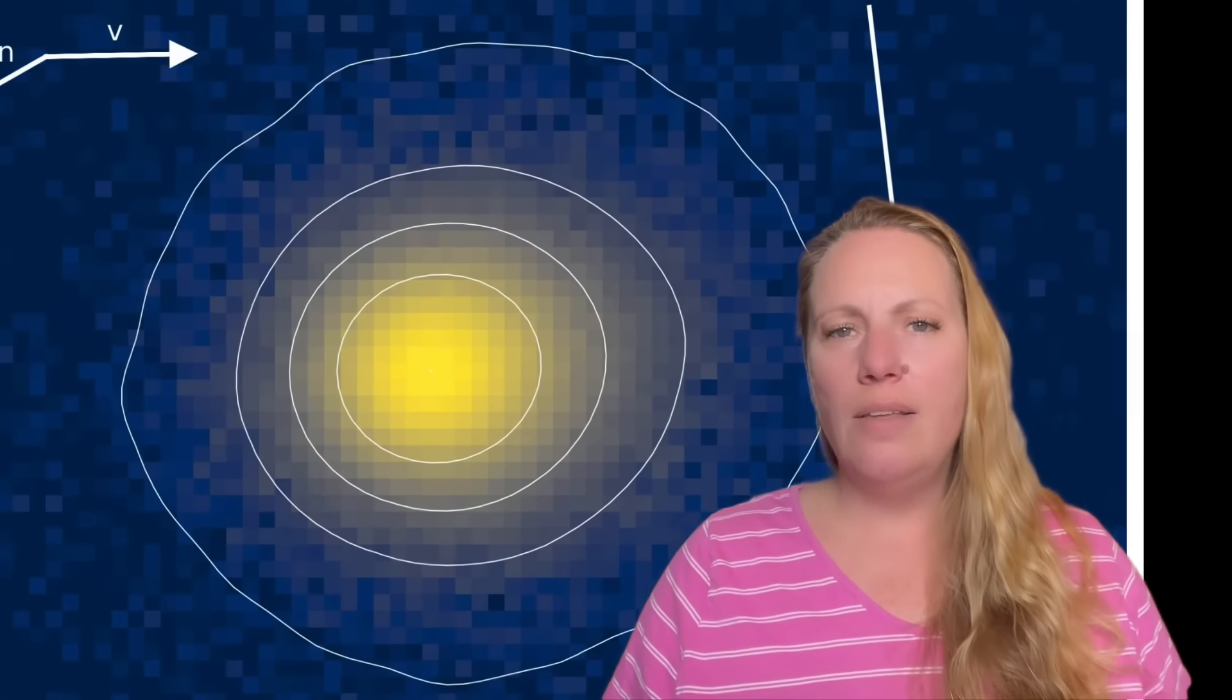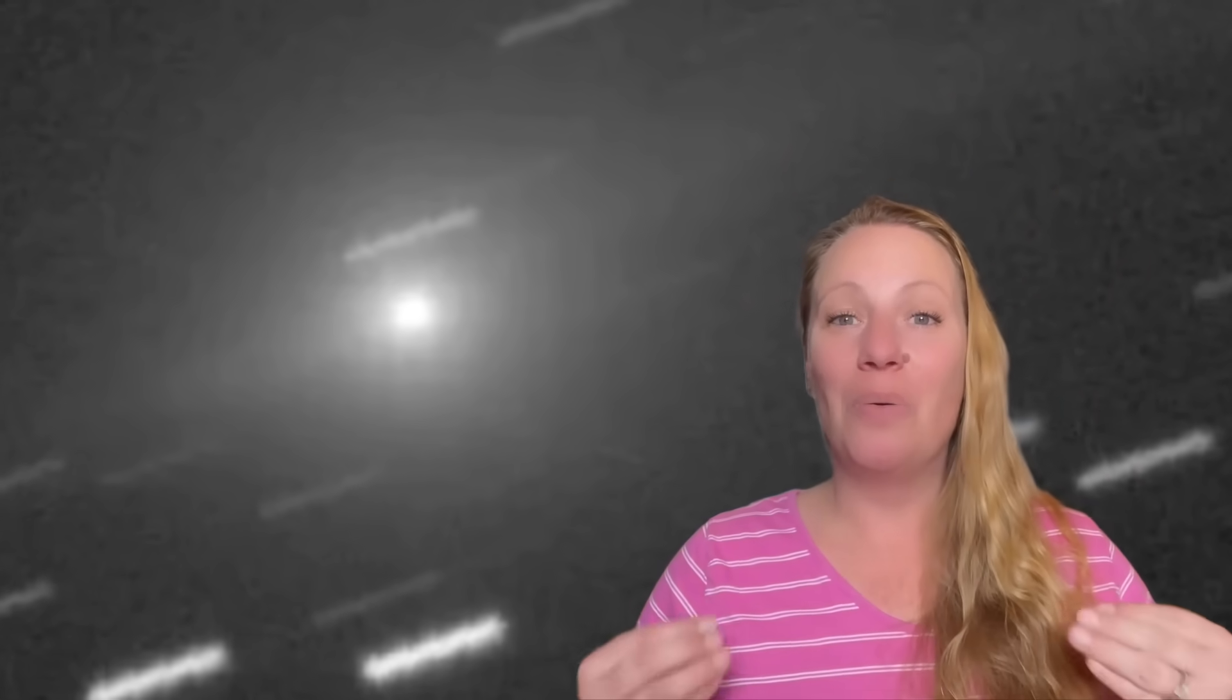But okay, icy moons. So what is interstellar object 3i atlas? Is it an icy moon that's moving through our solar system? Well, if these patterns are something like that, this would suggest that 3i atlas may be erupting cryovolcanoes right now. And this is what we see.